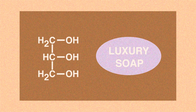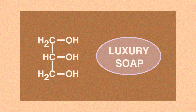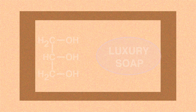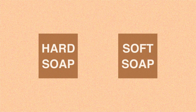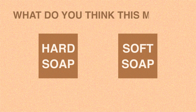Glycerine is found in luxury soaps because of its ability to make soaps appear translucent. There are two kinds of soap: hard soap and soft soap. What do you think this means? Pause the video and continue when ready.